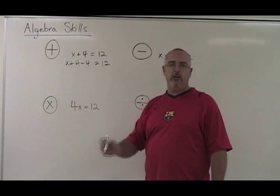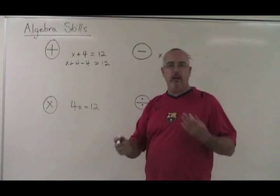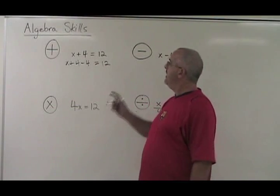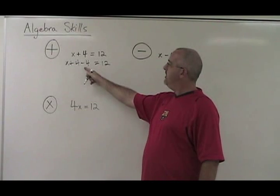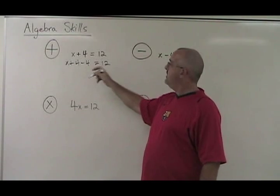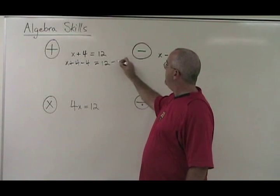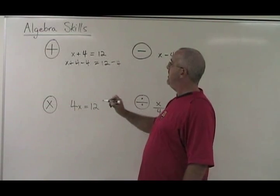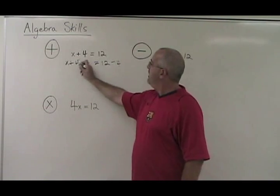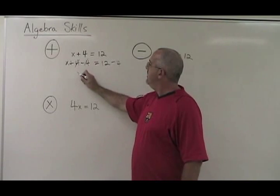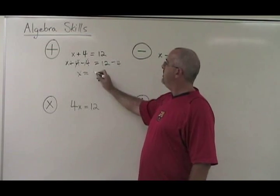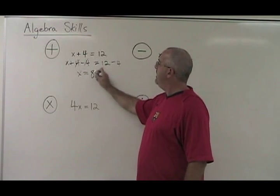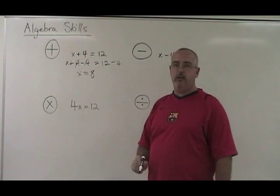If you add 4 and then subtract 4, they cancel out. The rule of algebra, though, is if you subtract 4 on the left side, you have to subtract 4 on the right side. These cancel and you end up with X equals 12 minus 4, which is 8. You have your answer.